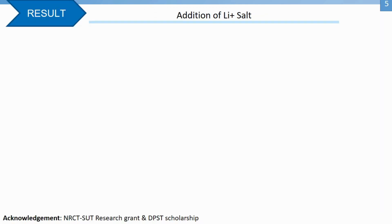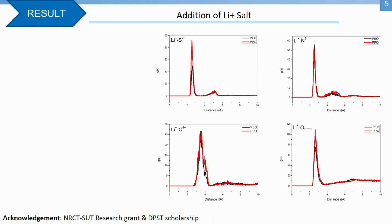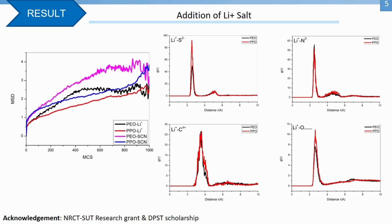Finally, we investigate the structures and diffusion of lithium thiocyanate salt in PPO in comparison with PEO. For structures of polymer and salt, PEO and PPO have similar coordination structures with salt based on radial distribution function analysis of lithium with sulfur, carbon, and nitrogen, but quite different for lithium and oxygen. In that, it seems like PPO captures lithium stronger. For ionic mobility, we use mean square displacement to monitor lithium and thiocyanate ion diffusion. It seems that both ions diffuse slower in PPO matrix.